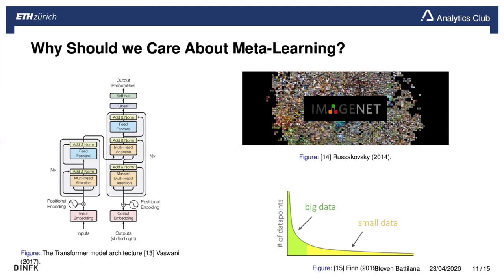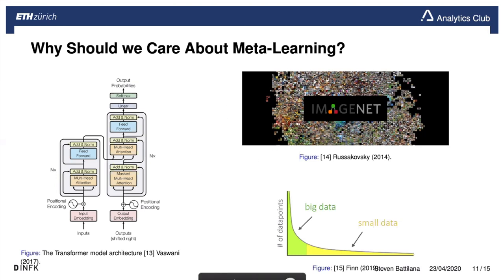Why should you care about meta learning? Consider a large transformer model — to train it successfully, you need a humongous amount of labeled data. This can be a limitation when data is scarce. ImageNet is an example of a large labeled dataset. The current state-of-the-art thrives in the 'big data' corner, but what if you have a task with very little data? It would be interesting to move from large datasets into a regime where you need less data to learn well.